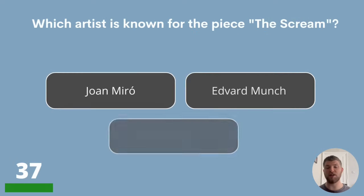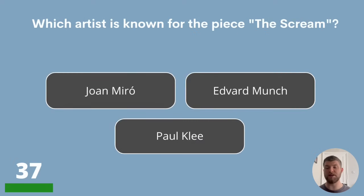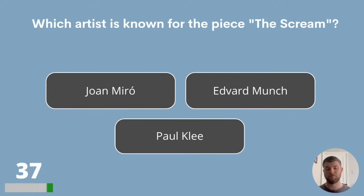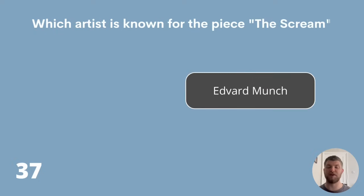Question 37. Which artist is known for the piece The Scream? Joan Miro, Edvard Munch or Paul Klee? The answer is Edvard Munch.